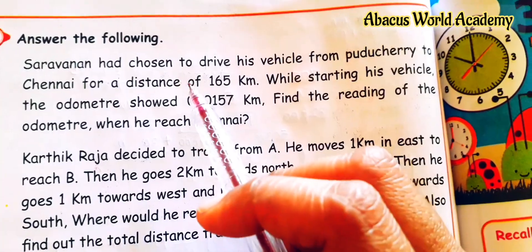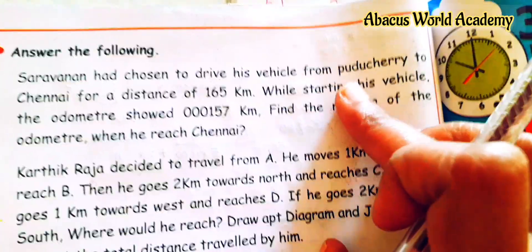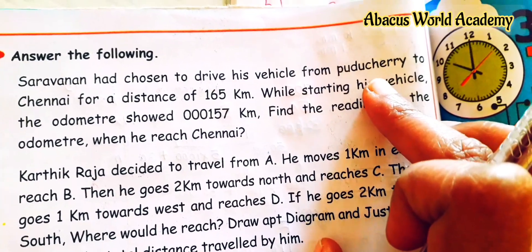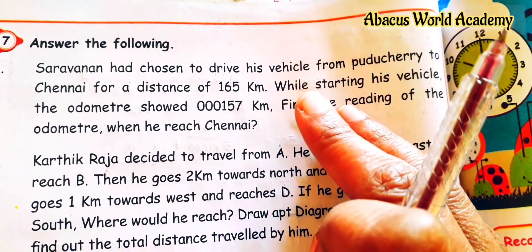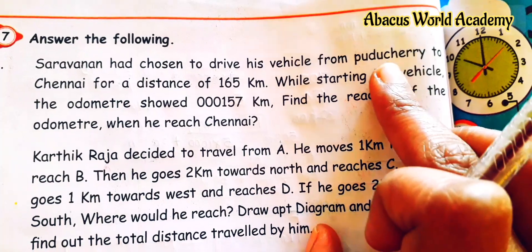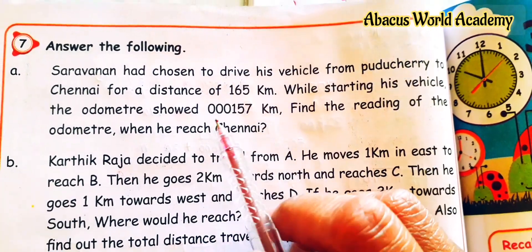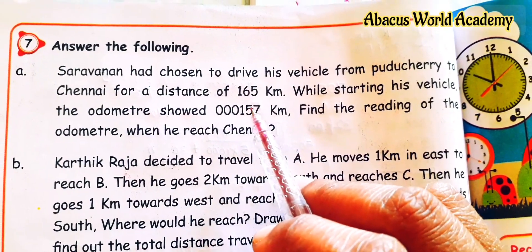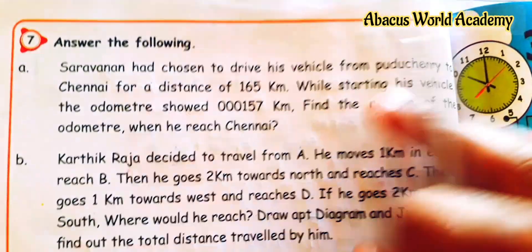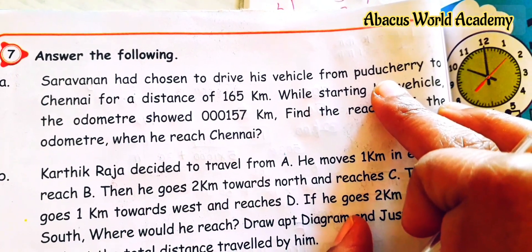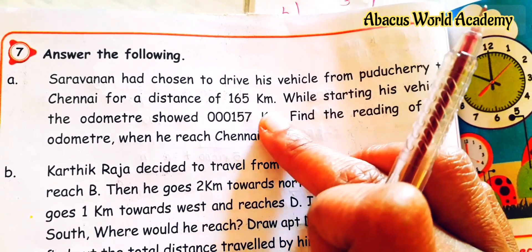So Saranand chose to drive his vehicle from Puducherry to Chennai. The distance from Puducherry to Chennai is 165 km.